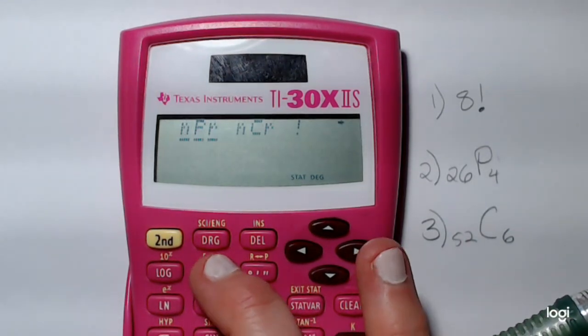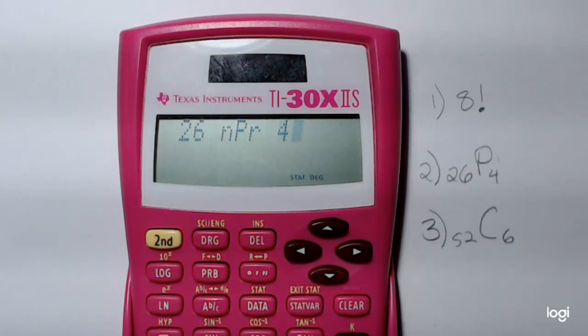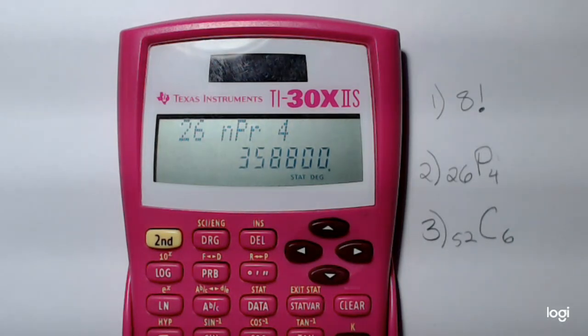Again, go to the probability menu, and that first option is N permute R. I'm going to press enter, and then put in R, which is 4, and then enter again. So we get 358,800.